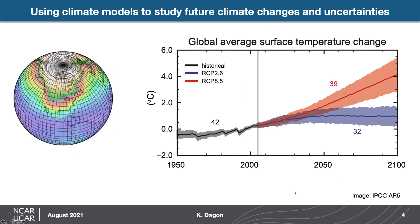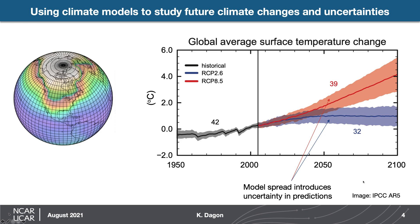We know that we can use climate models to study future climate changes. I'm showing here a figure from the IPCC showing simulated historical global average surface temperatures and then projected temperature changes to the end of the century from high and low emission scenarios. But we can see that model spread introduces some uncertainty — the shading encompasses all of the roughly 30 models used, which produce generally the same answer but with some spread in predictions. The question is: where does that uncertainty come from?